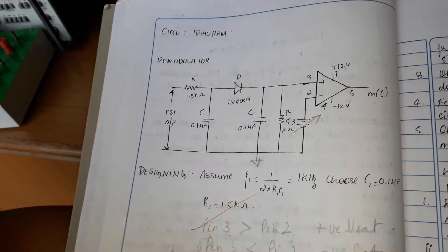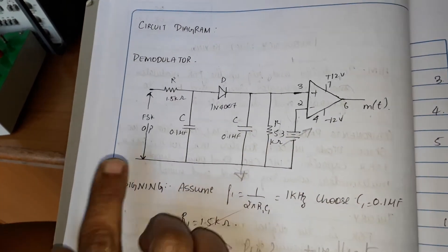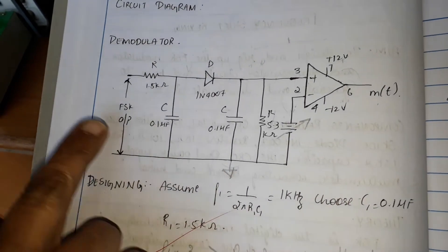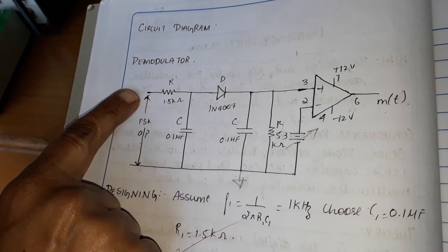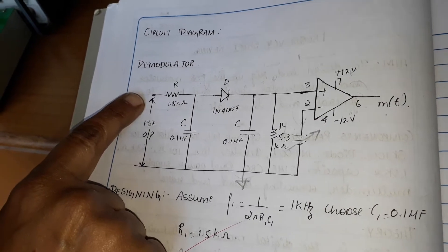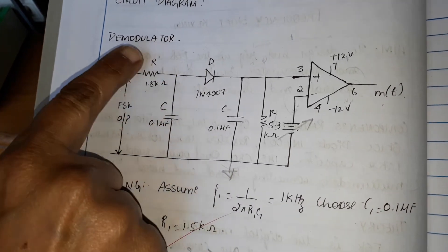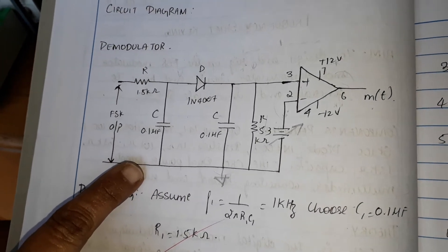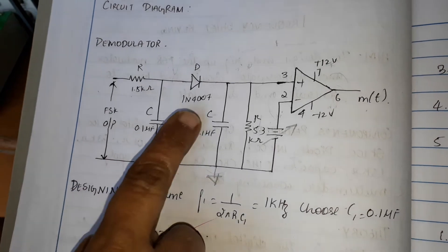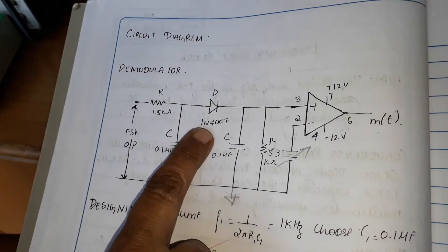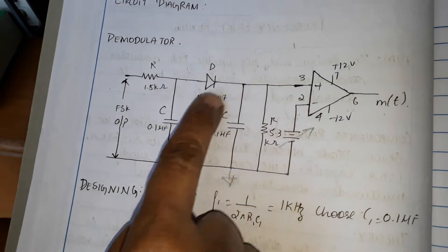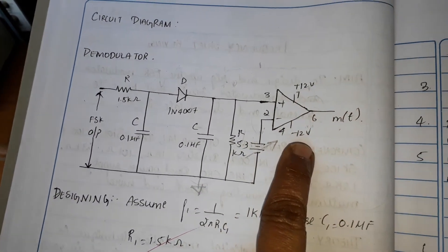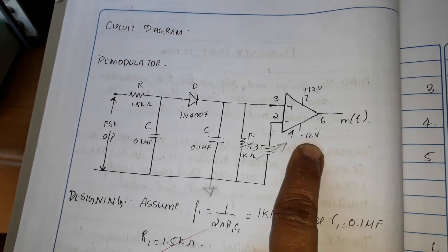The modulated signal is given to the demodulator circuit. The input to the demodulator circuit comes from the modulation circuit. The first part of the demodulator circuit is a low-pass filter, which removes one set of frequencies. Then we have a point contact diode or an ordinary diode, and an R-C combination which acts as an envelope detector.